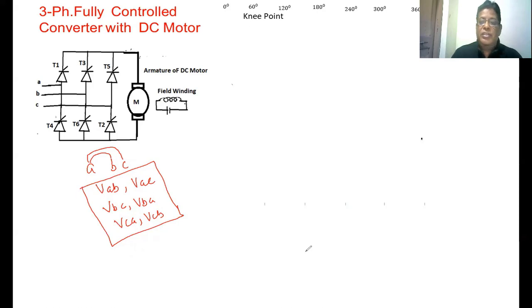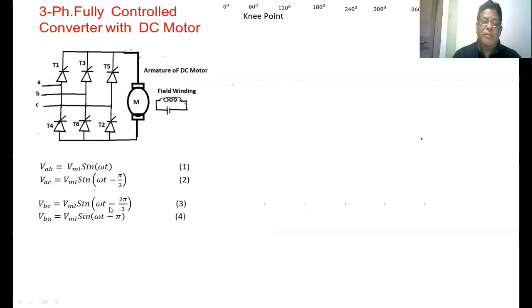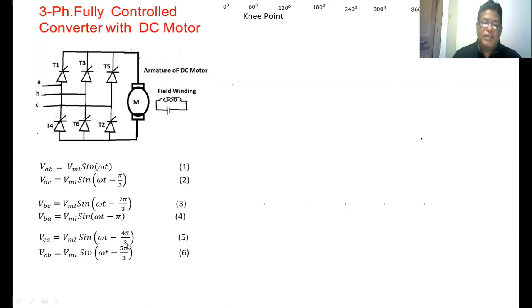We are going to draw these six line voltages mathematically. VAB equals VmL sin(ωt). VAC equals VmL sin(ωt − π/3), because the delay angle between AB and AC is 60 degrees. VBC equals VmL sin(ωt − 2π/3). VBA equals VmL sin(ωt − π). VCA equals VmL sin(ωt − 4π/3). VCB equals VmL sin(ωt − 5π/3). These are the expressions for the six line voltages.